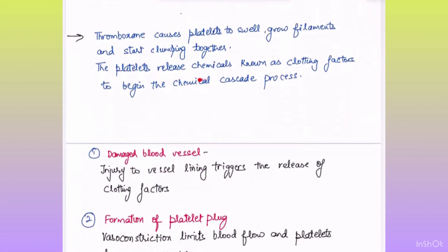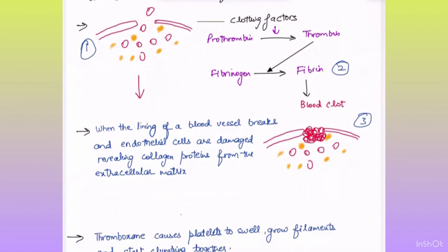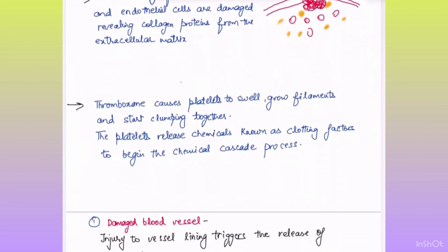The platelets release chemicals known as clotting factors to begin the chemical cascade process. Cascade means this type of process where when clotting factors get activated, they activate thrombin, thrombin activates fibrin and then fibrin causes blood clotting. This is called a cascade. The steps happen one after another or they are linked steps.